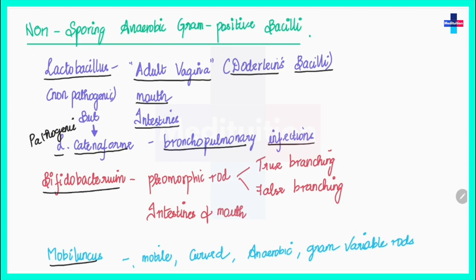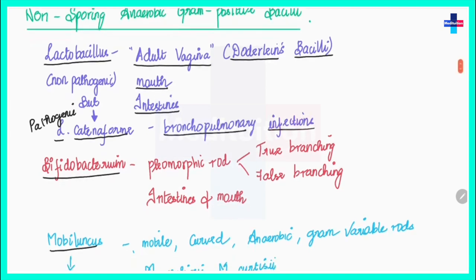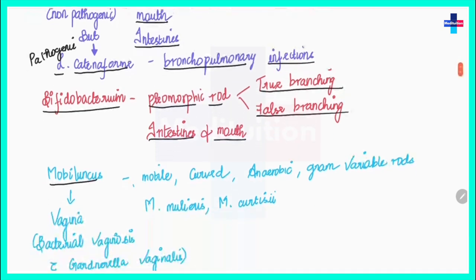The next bacterium is Bifidobacterium. This is a pleomorphic rod that shows branching — both true branching and false branching. These bacteria are found in large numbers in our intestines and mouth.